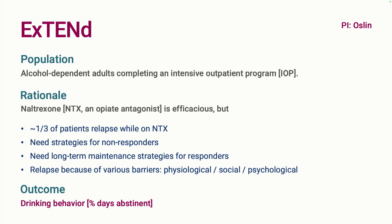Naltrexone is pretty efficacious, but about a third of patients relapse when on it, so it doesn't work for everyone. We need strategies for non-responders. This team also wanted to figure out what kinds of maintenance strategies were best even for people for whom naltrexone seems to be working — the responders. The reasons for relapse on naltrexone are multi-component: physiological, social, and psychological.